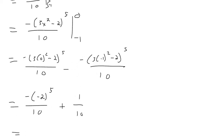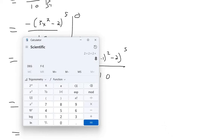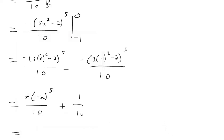And negative 2 to the 5th, that's 2, 3, 4, 5. That's 32. That's negative 32. So that's positive 32 over 10. So that's 33 over 10.